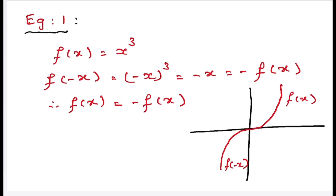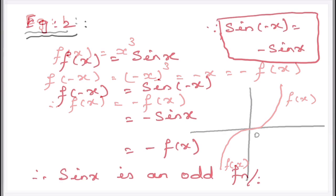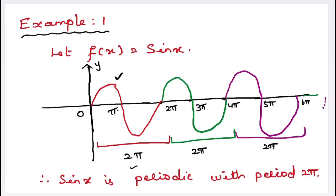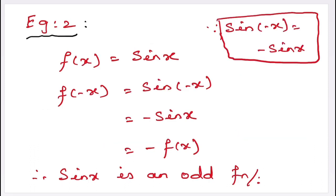The graph of an odd function is always symmetrical about the origin — it does not change when you invert the graph upside down. For example, in a playing card like king or queen, the picture does not change when you flip over the card. Our next example is f(x) = sin x. That is, f(−x) = sin(−x) = −sin x, since sin values are positive in the first and second quadrant and negative in the third and fourth quadrant. Therefore, sin(−x) = −sin x = −f(x), so sin x is an odd function.